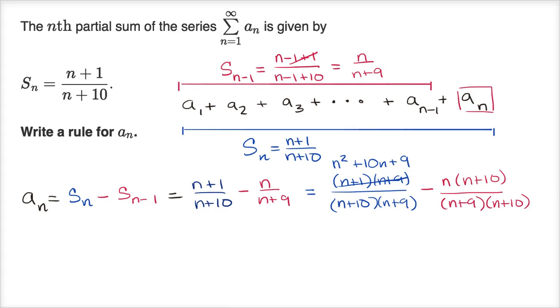And then this right over here is n² + 10n. Let me do it in that red color. So this is n² + 10n. And remember, we're going to subtract this.